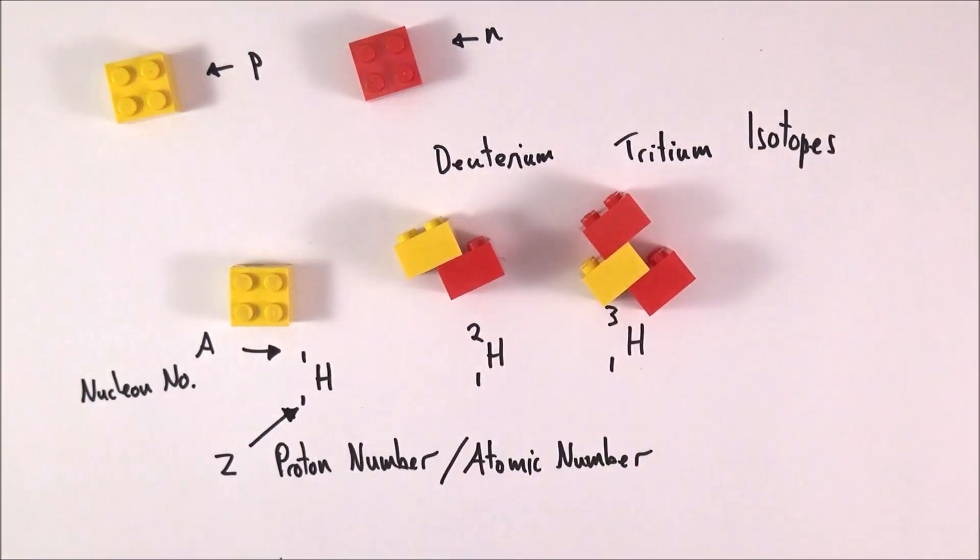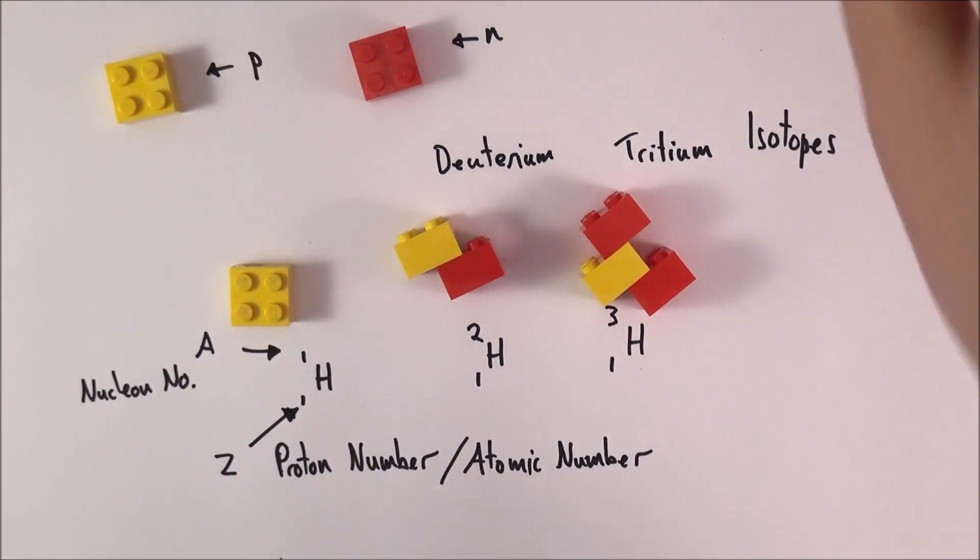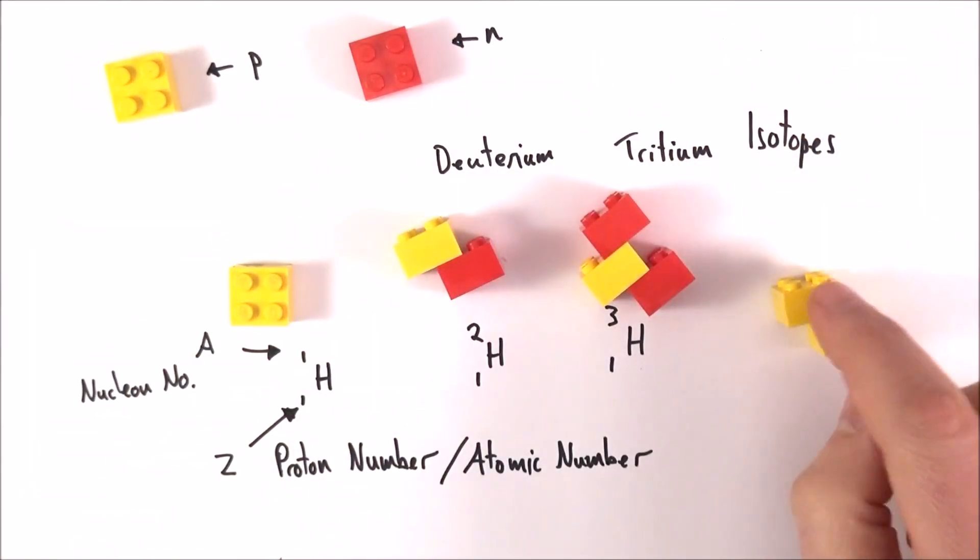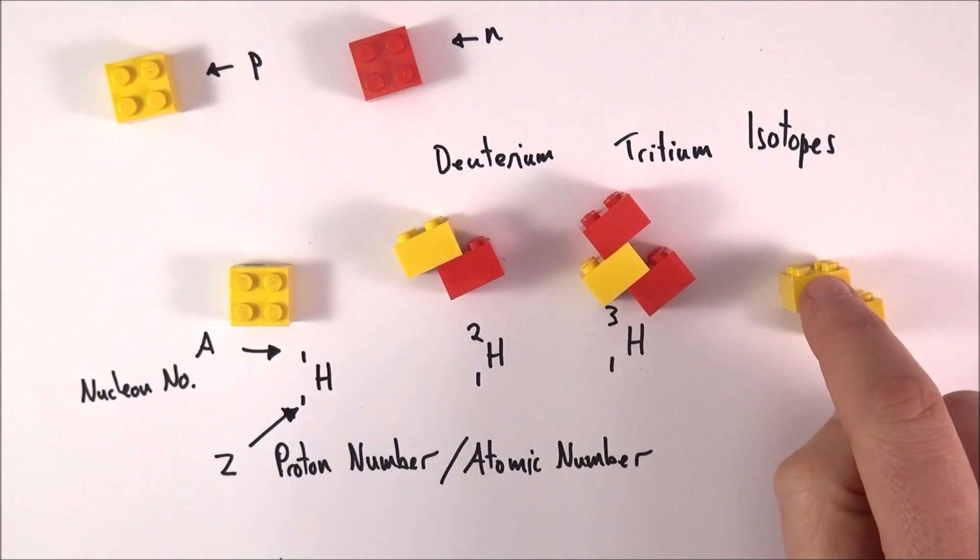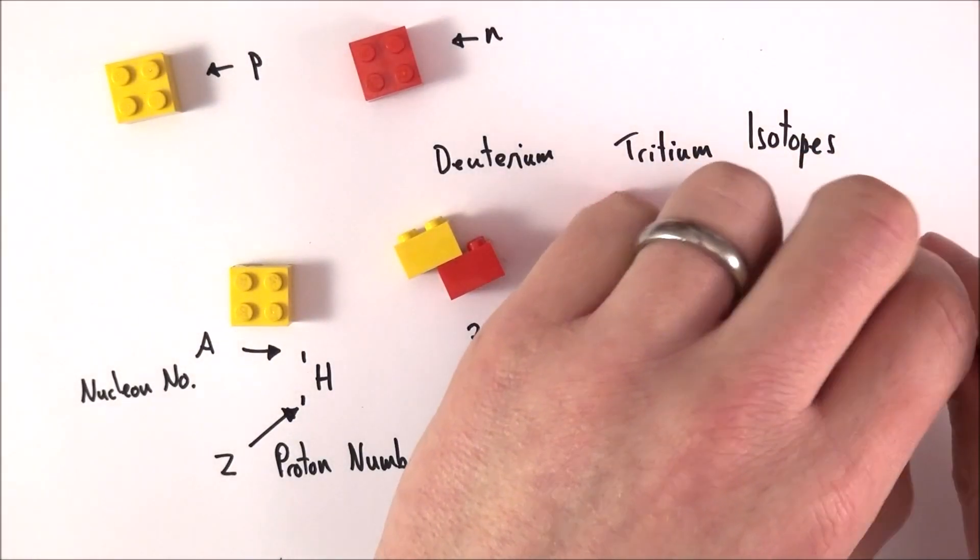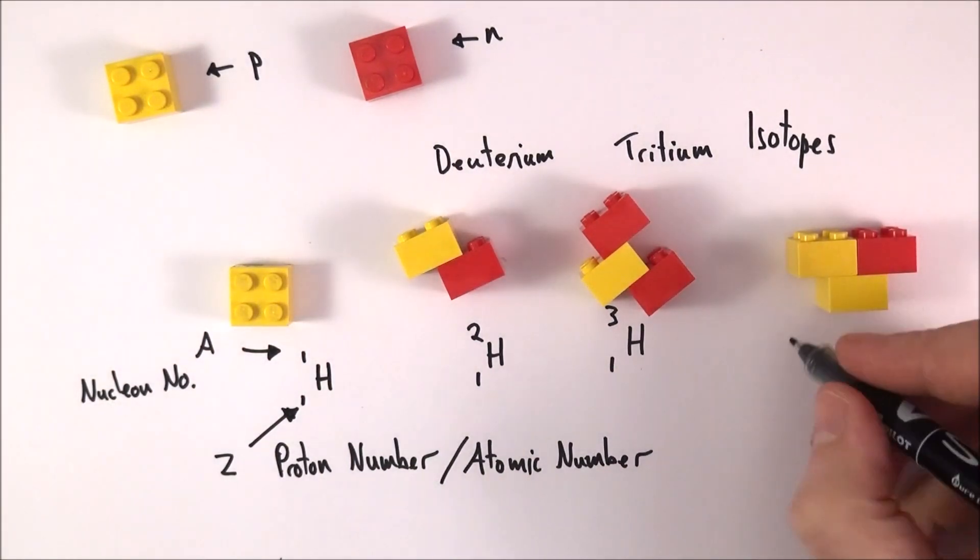These are some different isotopes. Now if we had one of these but this time it had two protons in the middle, it can't be hydrogen anymore because it's the protons that determine the element.